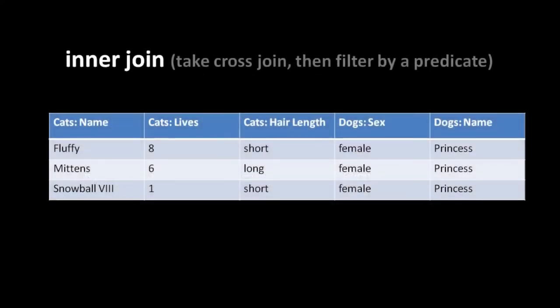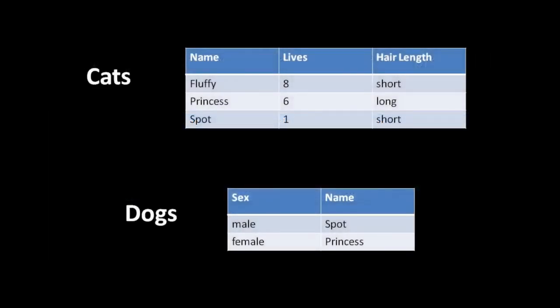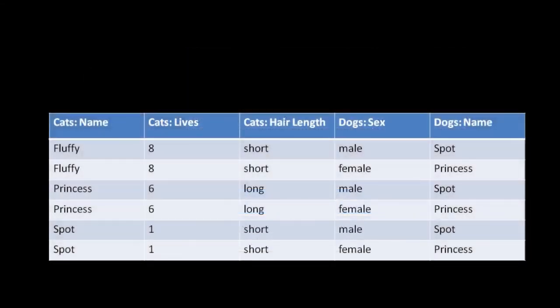There are also what are called inner joins and outer joins. An inner join is simply a cross-join but then filtered by a predicate. So here we've performed the same cross-join from the same two original tables, but then filtered to keep only the rows where the dogs sex column value is female. You're probably skeptical about the utility of joining unrelated tables - and you're right, joining totally unrelated tables generally doesn't produce useful results.